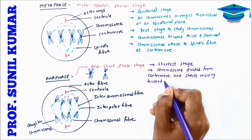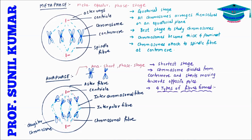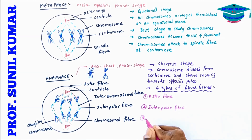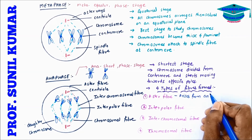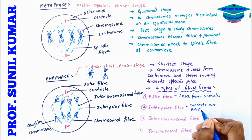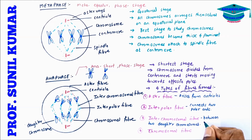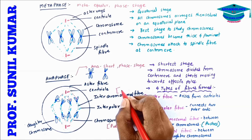For the exam, write that anaphase is the shortest phase; the chromosome divides from the centromere and moves towards opposite poles. There are four types of fibers: aster fiber (arises from the centriole), interpolar fiber (connects the two centrioles), interchromosomal fiber (between two daughter chromosomes, pushes them apart), and chromosomal fiber (between centriole and chromosome, pulls it toward the pole).